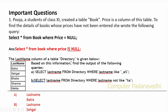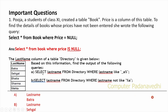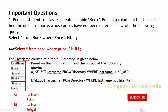Next, the last name column of a table directory is given. Based on this information, we will find the output: SELECT last_name FROM directory WHERE last_name IS NULL. We will also select names where the second character is 'N' using underscore: WHERE last_name LIKE '_N%'.